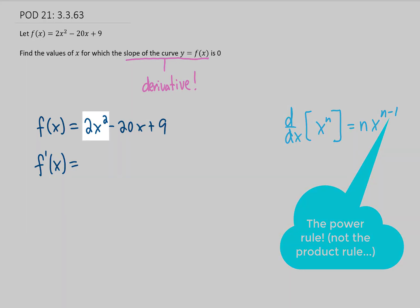In this case, we have 2x squared. We take this 2, multiply it by this 2 to get 4, and then subtract 1 from that power to get x to the first power, or just x.